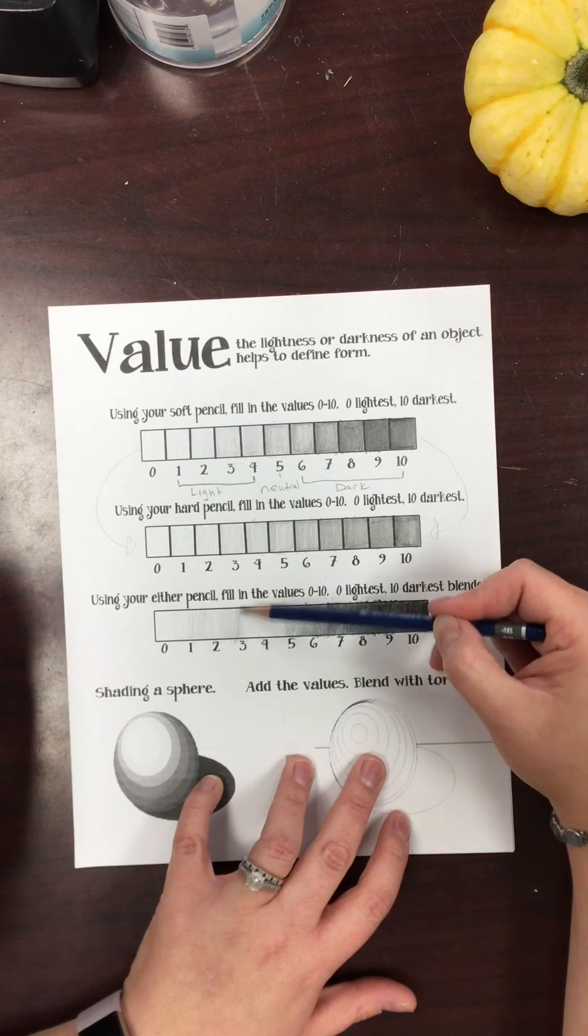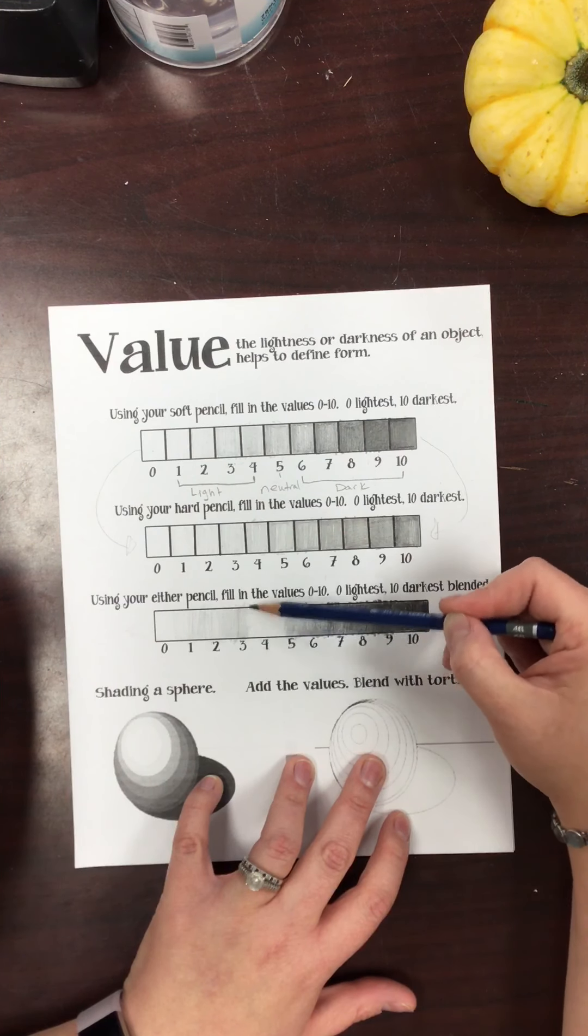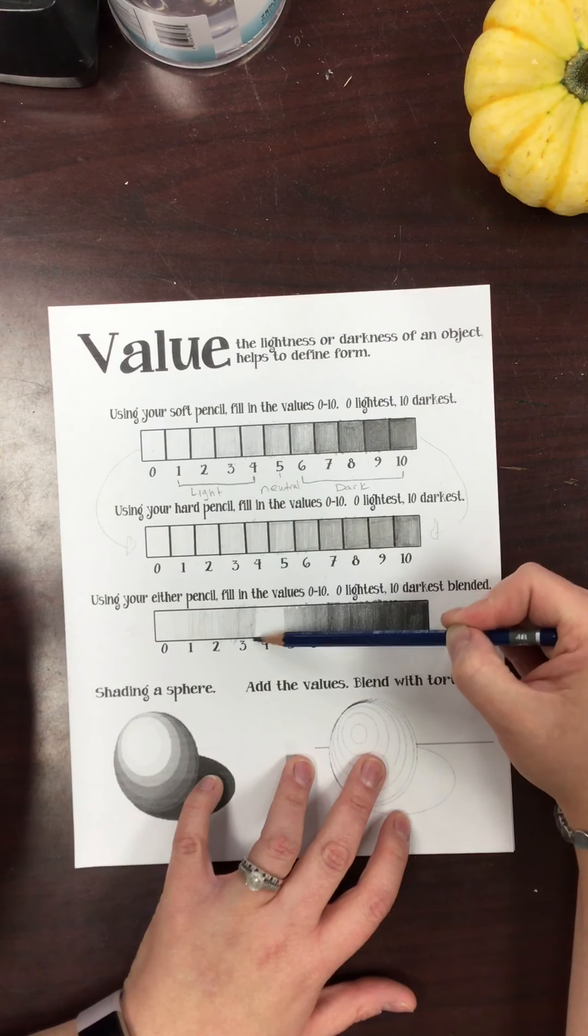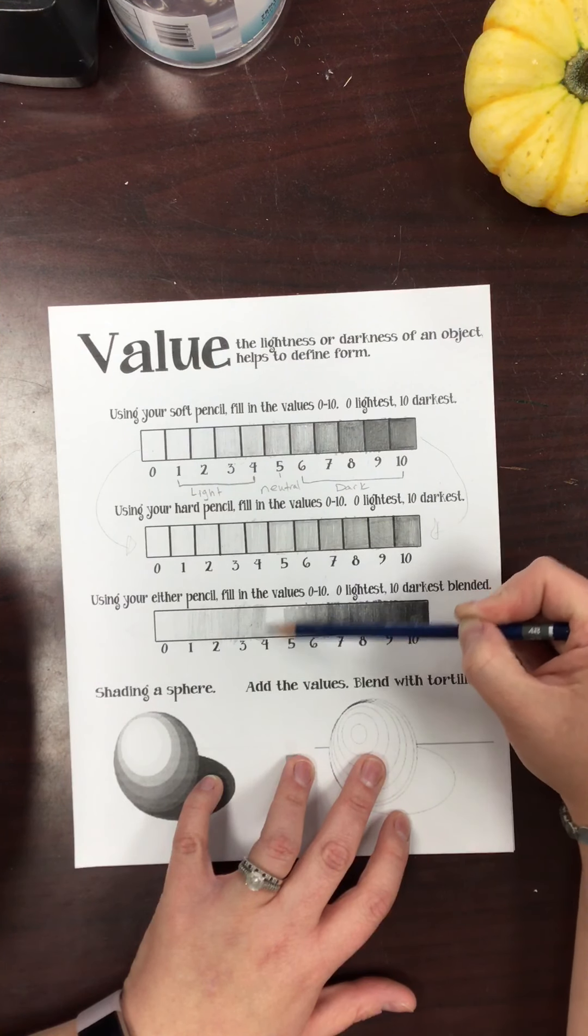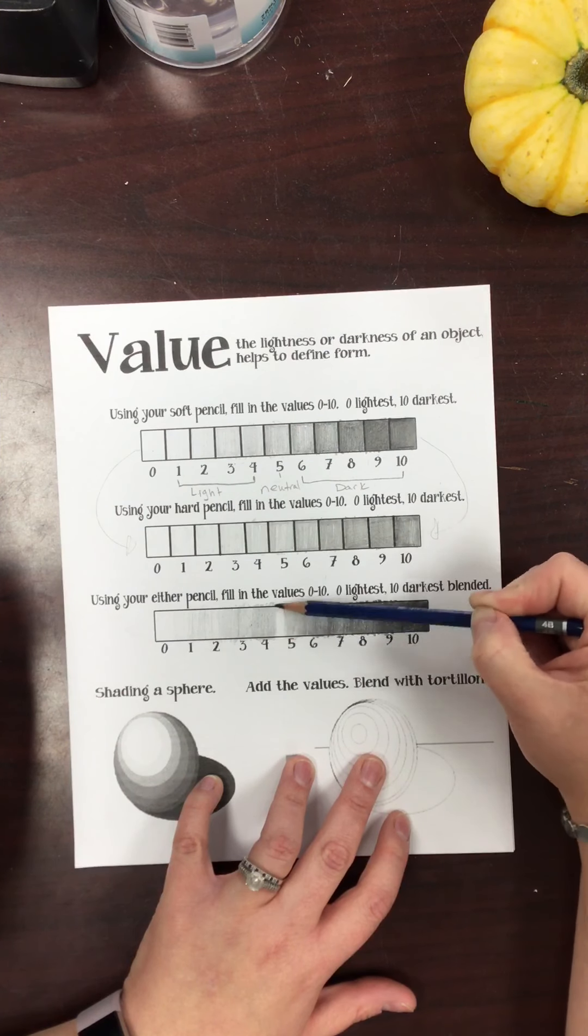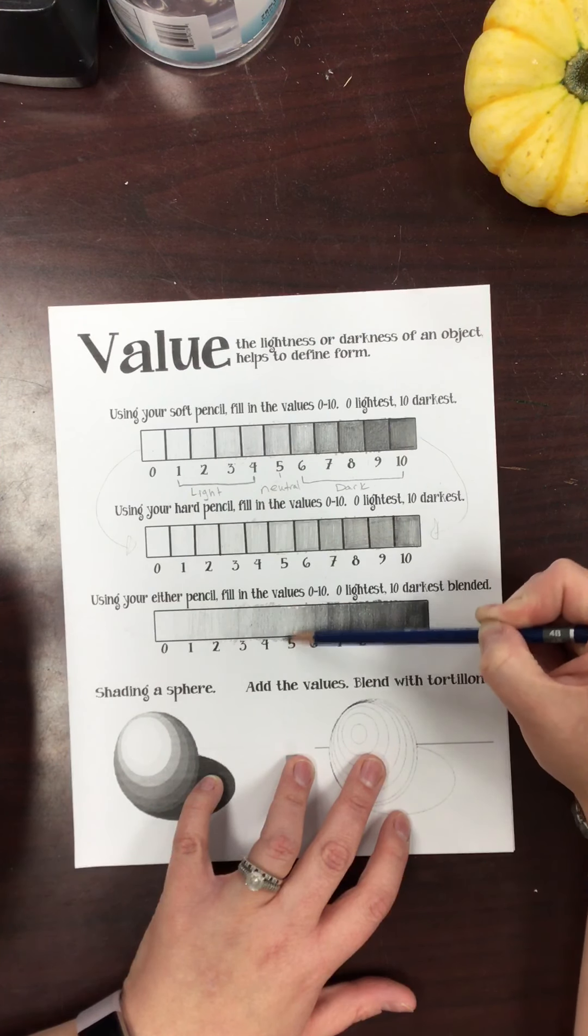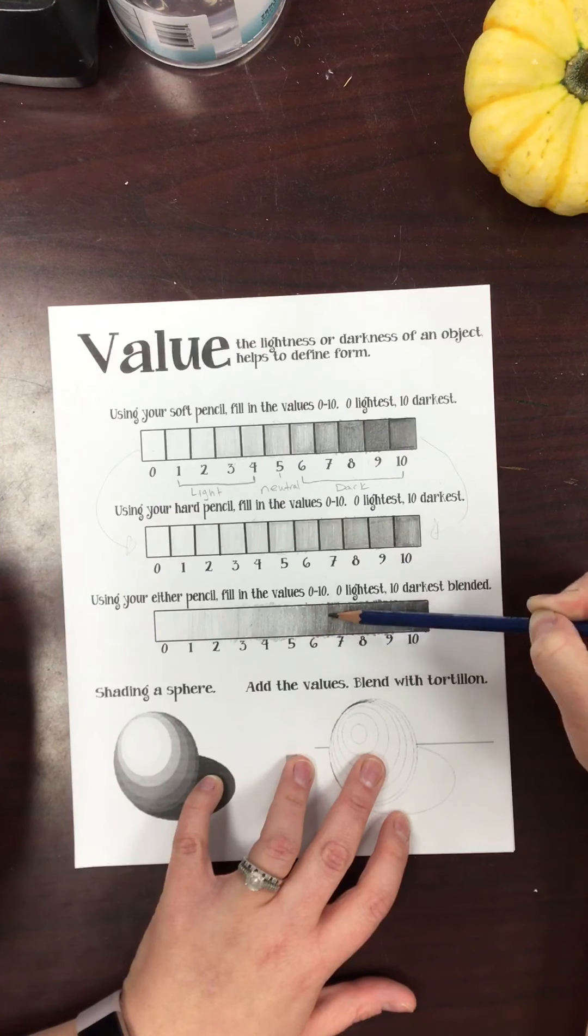And then here we go for three. Okay, I'm going to press down some more pressure for four. And then now I'm moving into five, just a little bit more pressure, and then I should meet there in the middle.